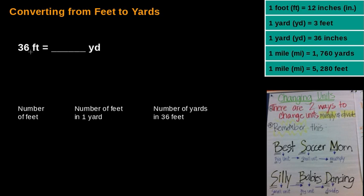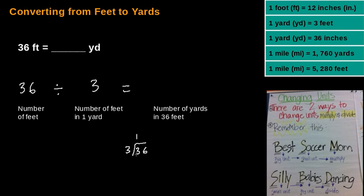We have 36 feet and we need to find how many yards. We're moving from feet to yards — from the smaller unit to the bigger unit. Silly Babies — small units to big units, we divide. So 36 divided by 3 (the number of feet in one yard) equals 12. That means we have 12 yards in 36 feet.